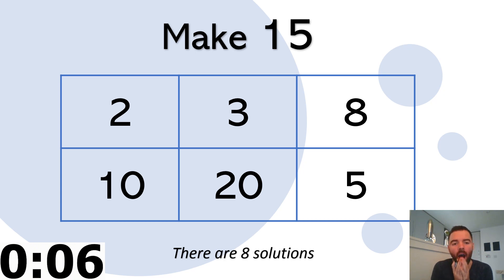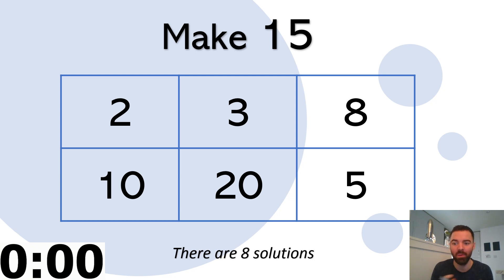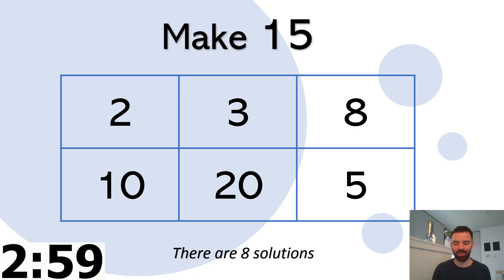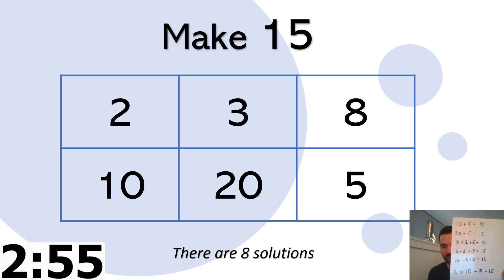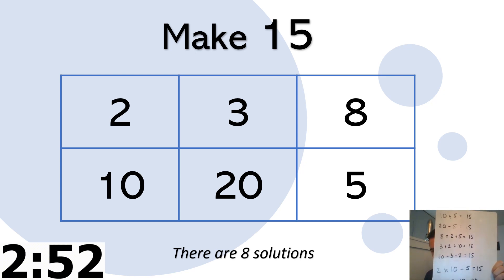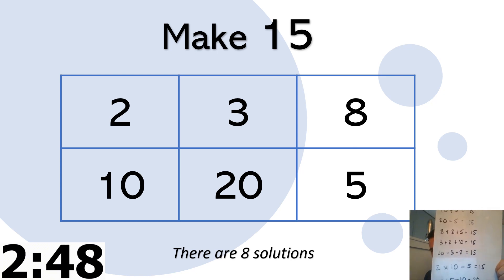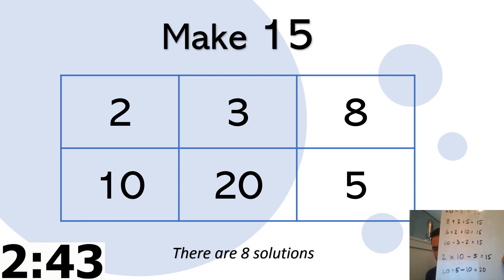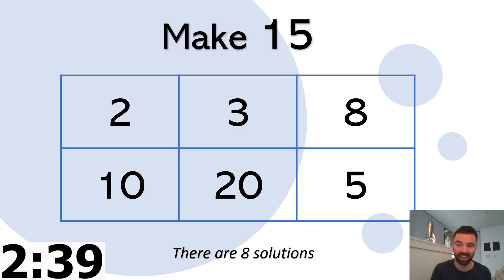I've got seven solutions and I need 15. I could multiply — two times ten. I have: 10 add 5 is 15, 20 take away 5 is 15, 8 add 2 add 5 is 15, 3 add 2 add 10, 20 take away 3 take away 2, 2 times 10 is 20 take away 5 is 15, 20 add 5 take away 10 is 20. That's only seven solutions.